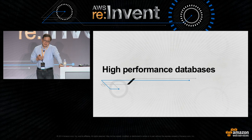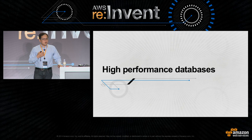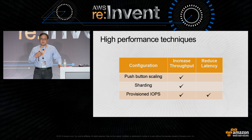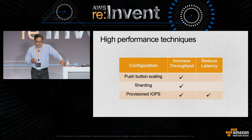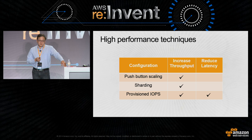Now let's turn our attention to designing high-performance databases. When talking about increasing performance, we talk about lowering latency as well as increasing throughput. There are a number of well-established techniques: push-button scaling, sharding, and provisioned IOPs will help increase throughput. Provisioned IOPs will also help reduce latency.